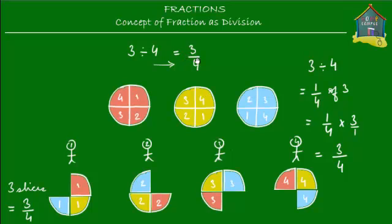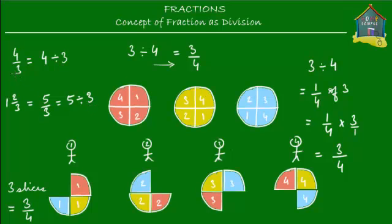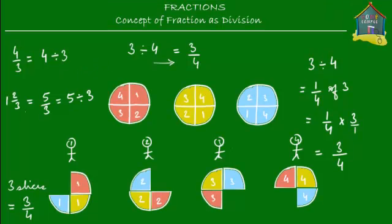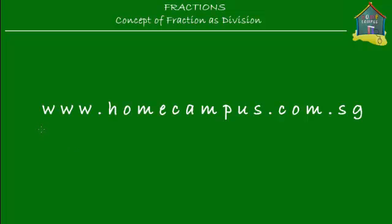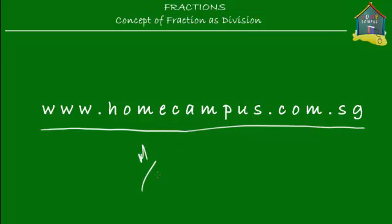This is true for every kind of fraction — not just proper fractions. Even improper fractions or mixed fractions follow the same rule. For example, an improper fraction like 4 upon 3 is the same as 4 divided by 3. Or a mixed number like 1 and two-thirds equals the improper fraction five-thirds, which is 5 divided by 3. That's how fractions are related to division. For practice problems and to see how good you're getting at math, visit www.homecampus.com.sg. Bye bye!